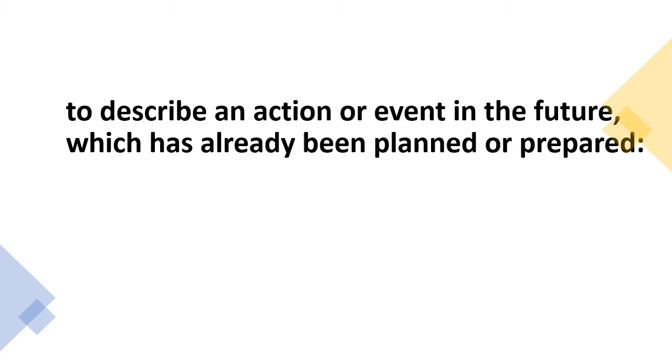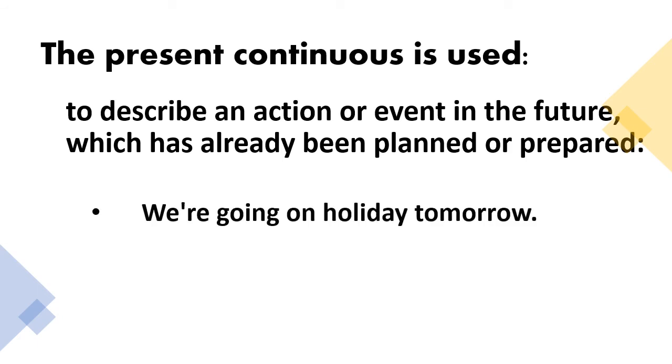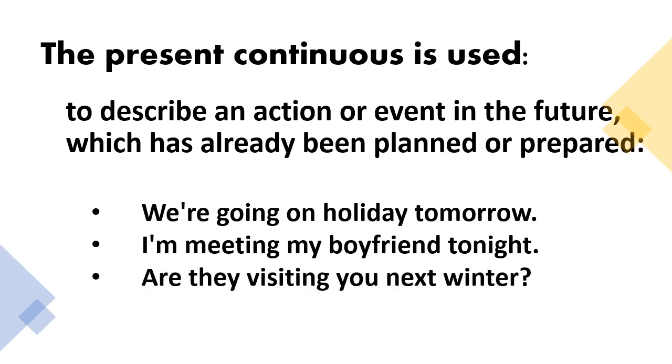It is also used to describe an action or event in the future which has already been planned or prepared. For example, we are going on holiday tomorrow. We are going is an action that is already planned. Another example, I am meeting friends tonight. I am meeting is an action that is planned that will be happening tonight. Another example, are they visiting you next winter? Are they visiting is an action that is being prepared for the next winter.